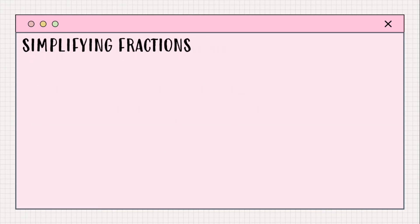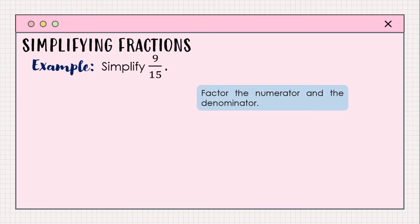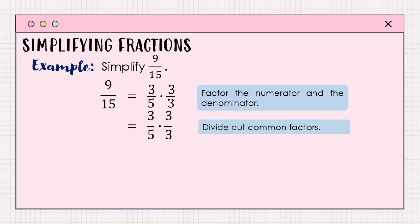Let us have an example. To simplify 9 over 15, we proceed as follows. First, factor out the numerator and the denominator — we write a product containing the prime factors of each. For the numerator, the prime factors of 9 are 3 and 3. For the denominator, the prime factors of 15 are 5 and 3. After writing these prime factors, we proceed to dividing out the common factors.